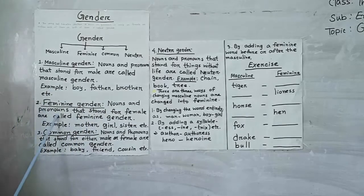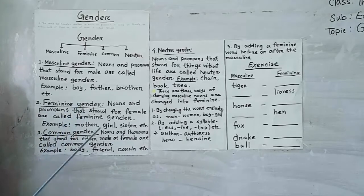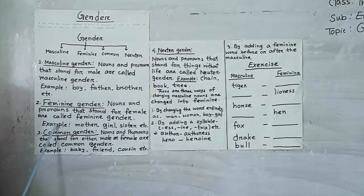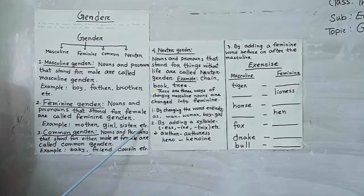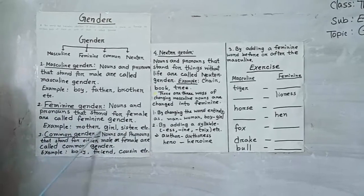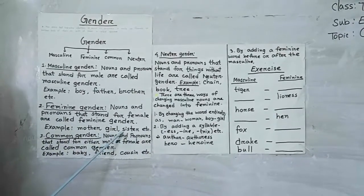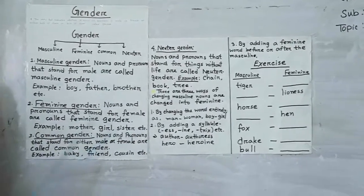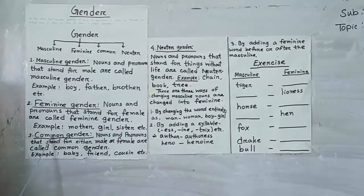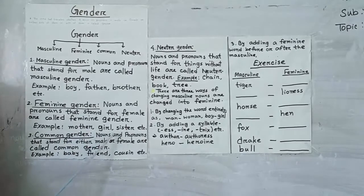Number 2, feminine gender. Feminine gender means nouns and pronouns that stand for female are called feminine gender. For example, mother, girl, sister, etc.